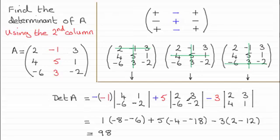So work those determinants out, multiply them with the elements in the front, and you'll find that you get 98. OK?